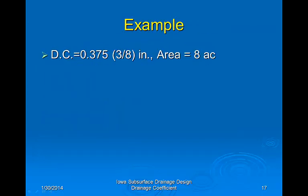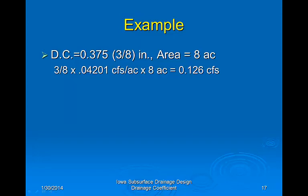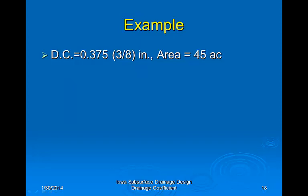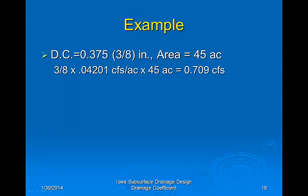Let's try an example. We want to install a subsurface drainage system on an 8-acre crop field designed to remove three-eighths inch of water per day — a three-eighths inch drainage coefficient. Since 1-inch drainage coefficient equals 0.04201 CFS per acre, it's a straightforward multiplication: three-eighths times 0.04201 times 8 acres gives 0.126 CFS as the required capacity of the outlet. The same calculation for a 45-acre site gives a required capacity of 0.709 CFS.